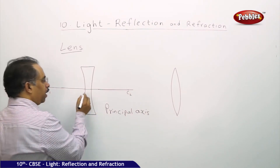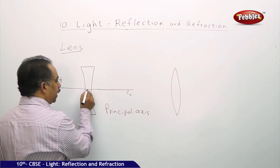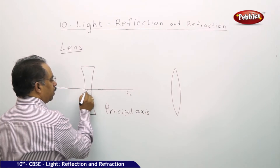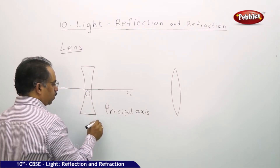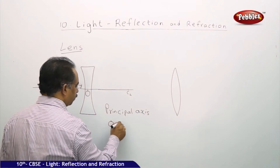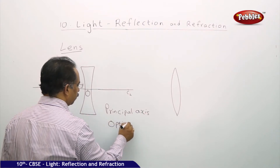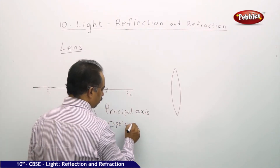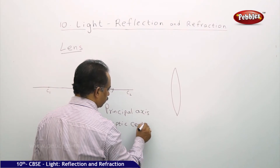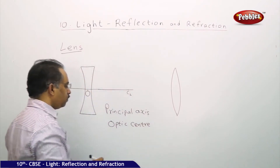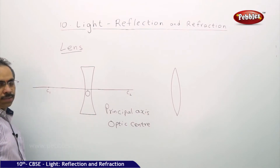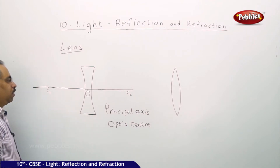Here I have the center of the lens — the geometric center of the lens. I will denote it by O. So this O is the optic center. O is the optic center for the lens.